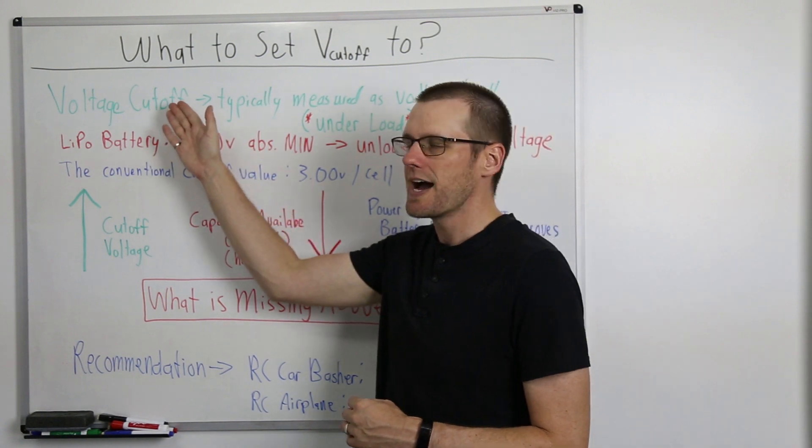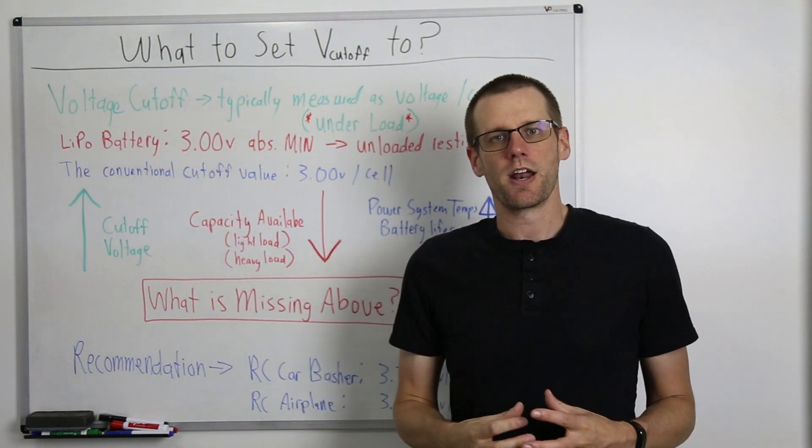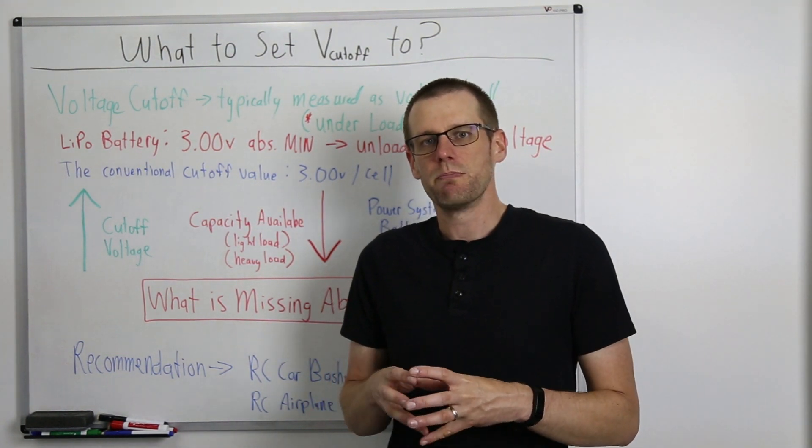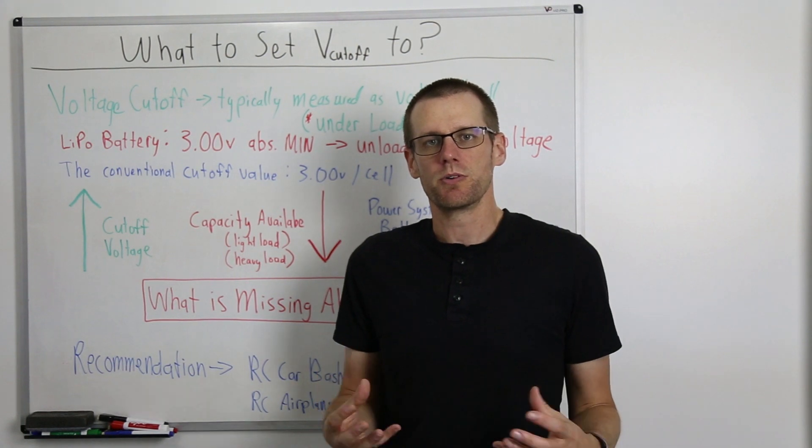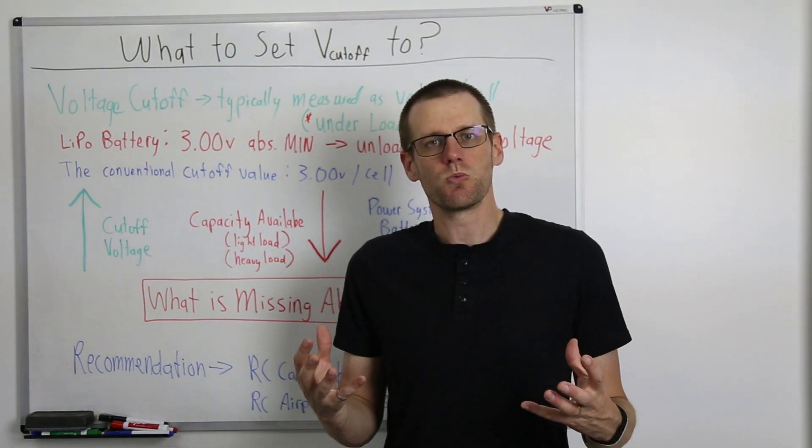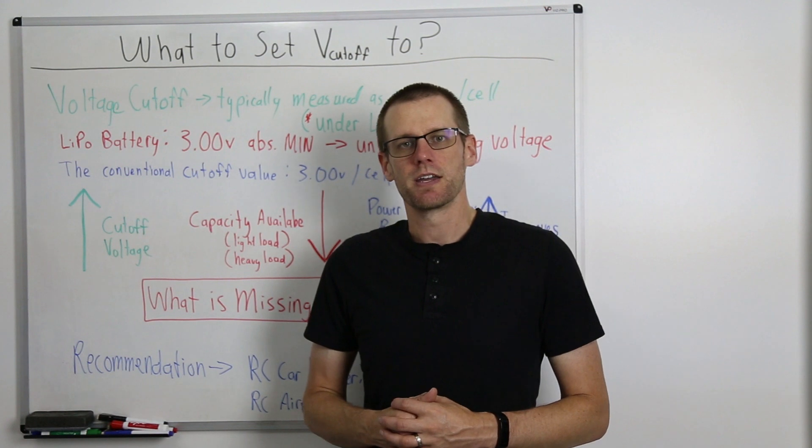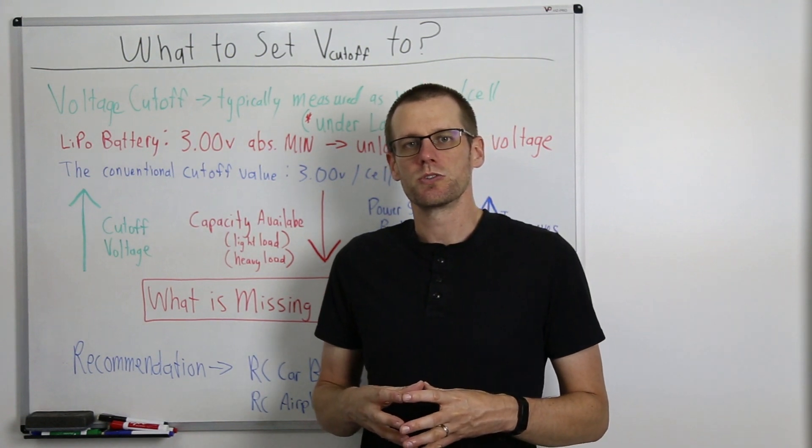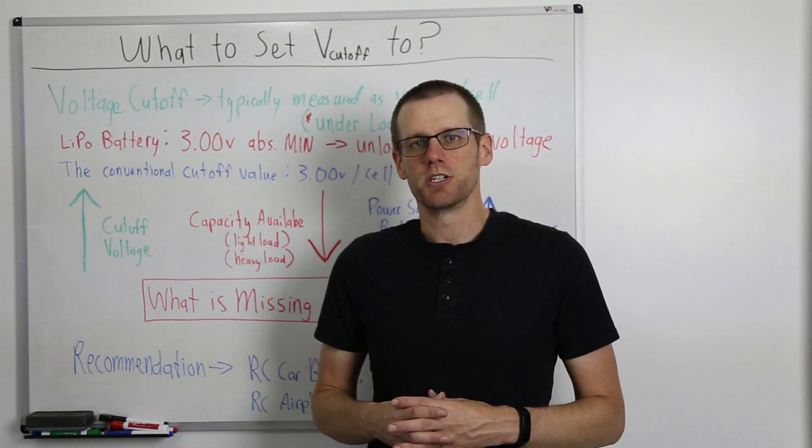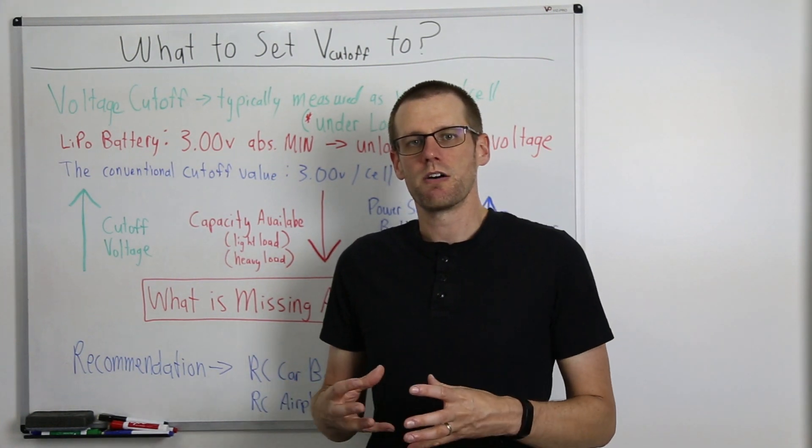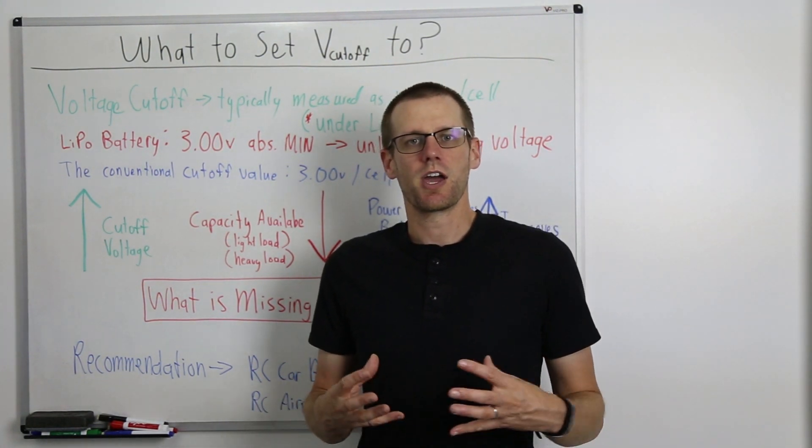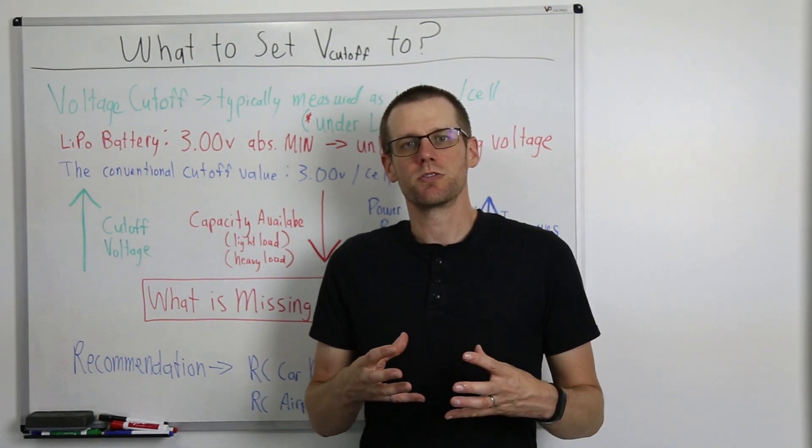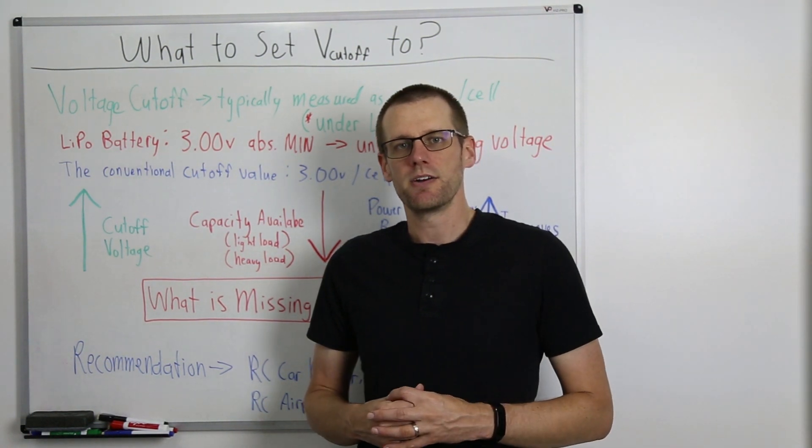So the first thing that we got to cover is what exactly is a voltage cutoff? Well, a voltage cutoff is something that is designed to make certain that our power system battery pack, the one that powers our brushless motor, does not get too low. There's a couple reasons why we don't want that battery pack to get too low. The first one is primarily due to safety. A battery pack that goes significantly under the absolute minimum voltage becomes a hazard to us and risk of any sort of potential fire can be the result if you end up running that battery too low.